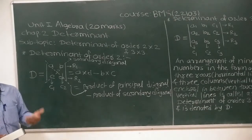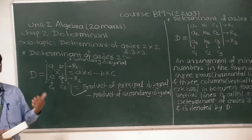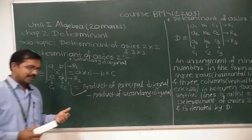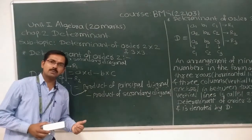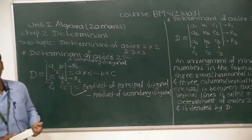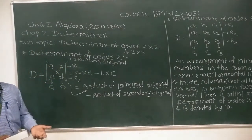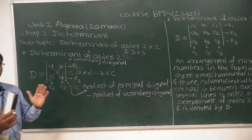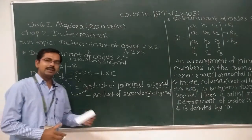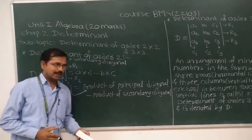Determinant of order 4: an arrangement of 4 by 4, that is 16 numbers, in the form of 4 rows and 4 columns enclosed between 2 vertical lines is called a determinant of order 4.